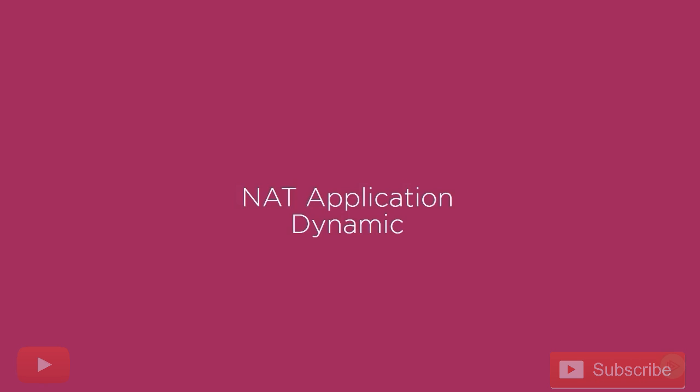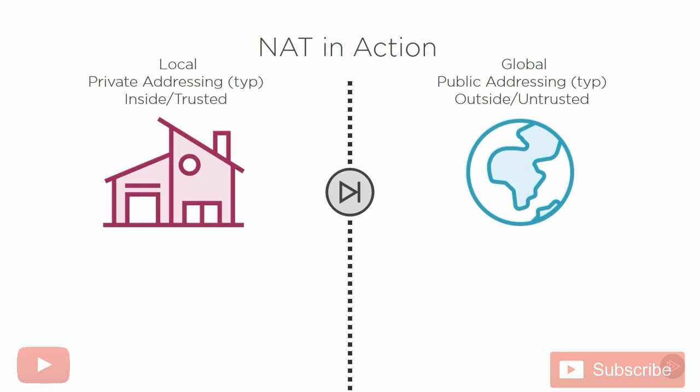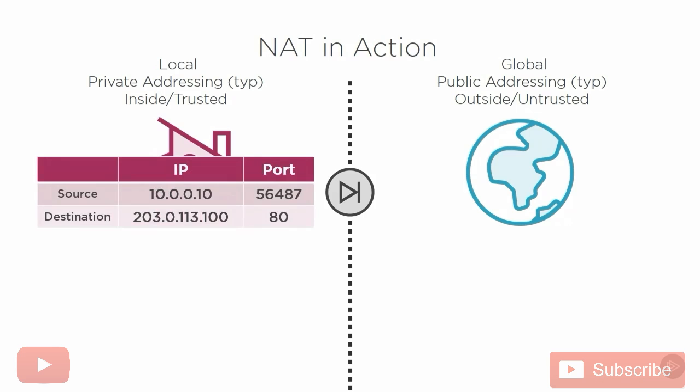This will prove useful because in order to apply NAT when we're doing dynamic NAT, we need a good understanding of local versus global. We're going to start simple — just one single user in our house trying to reach a website out on the public internet.